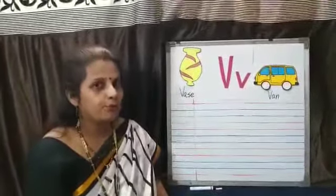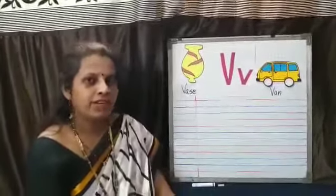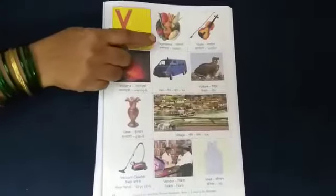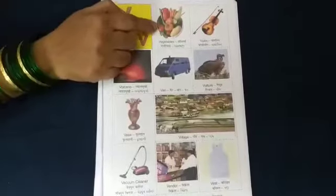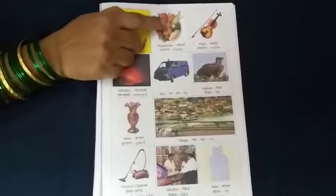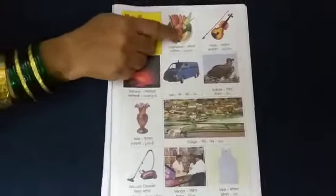Now let's see a few more pictures related to V. V for vegetables. Capsicum, potato, onion, corn. These all are vegetables. V for vegetables.